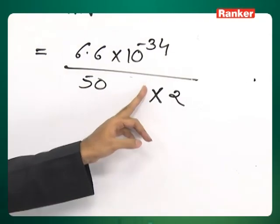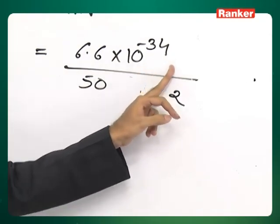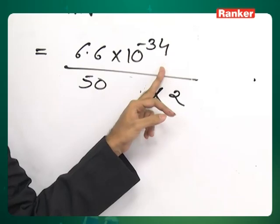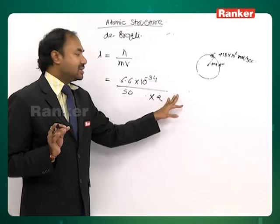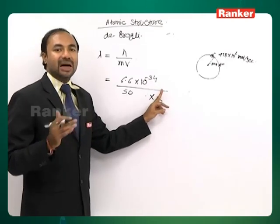Then you can see that the order of the wavelength will come out to be of the order of 10 to minus 33 minus 35 which obviously is negligible, completely insignificant. This is the value which we cannot even measure up to now.